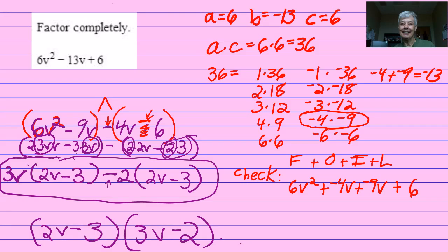Now in this kind of problem, the middle terms are like terms, so I can add them together. I'll have 6V squared plus negative 13V plus 6. Since plus a negative is the same thing as subtracting, I'll rewrite this as 6V squared minus 13V plus 6.